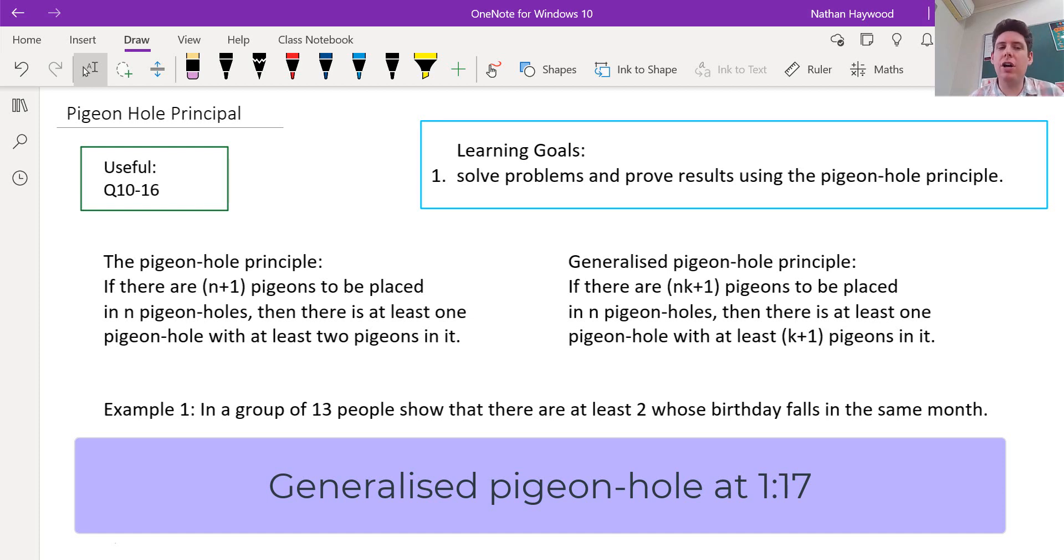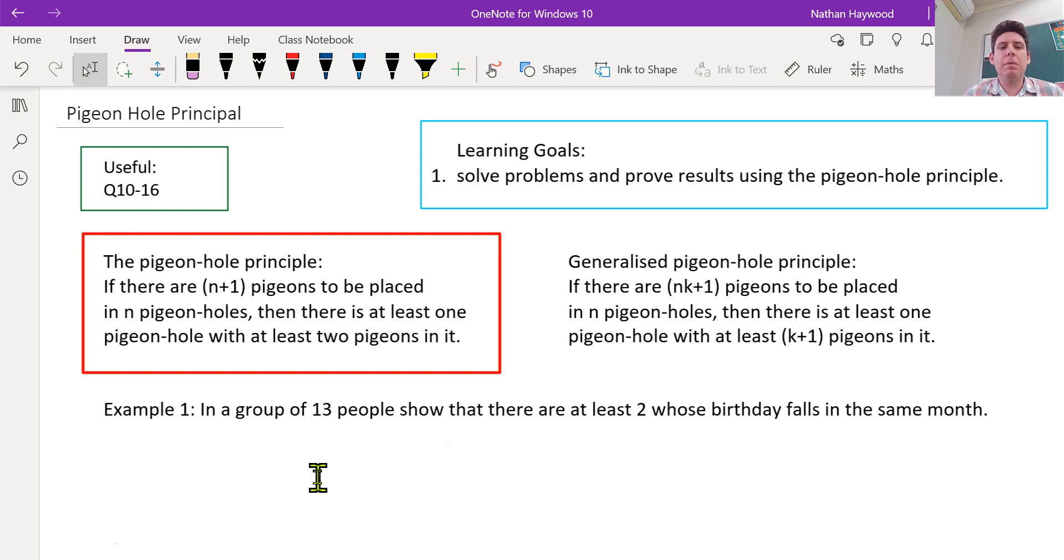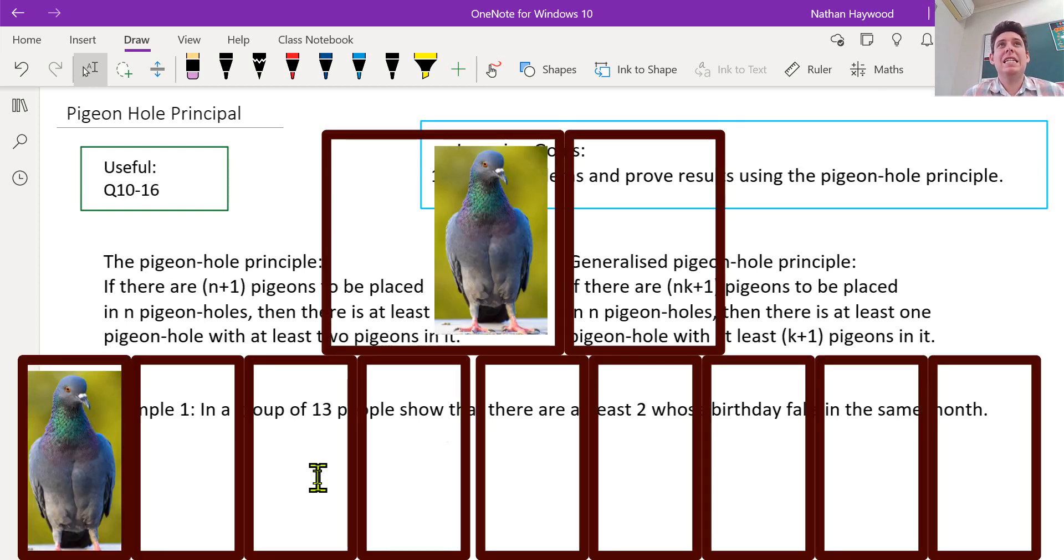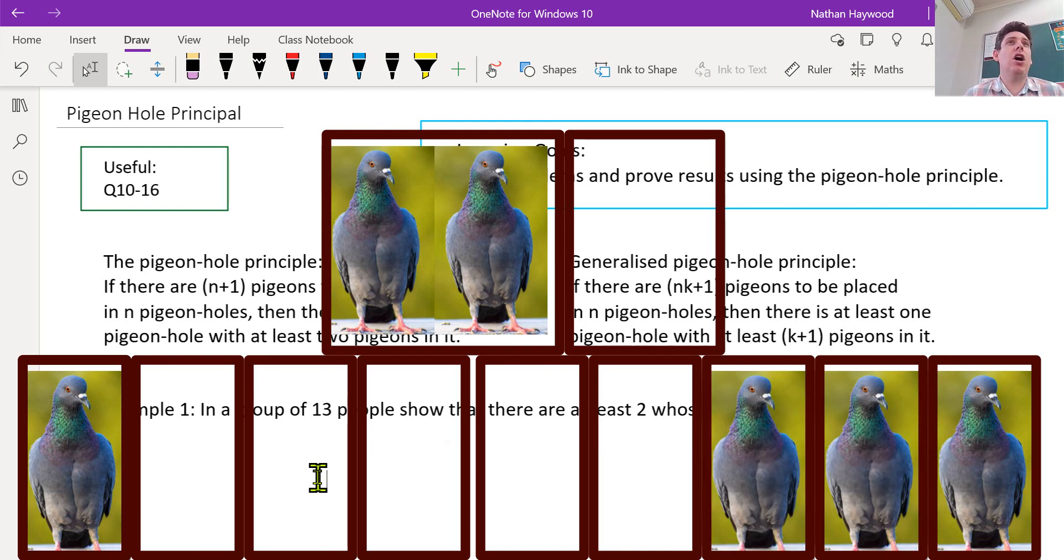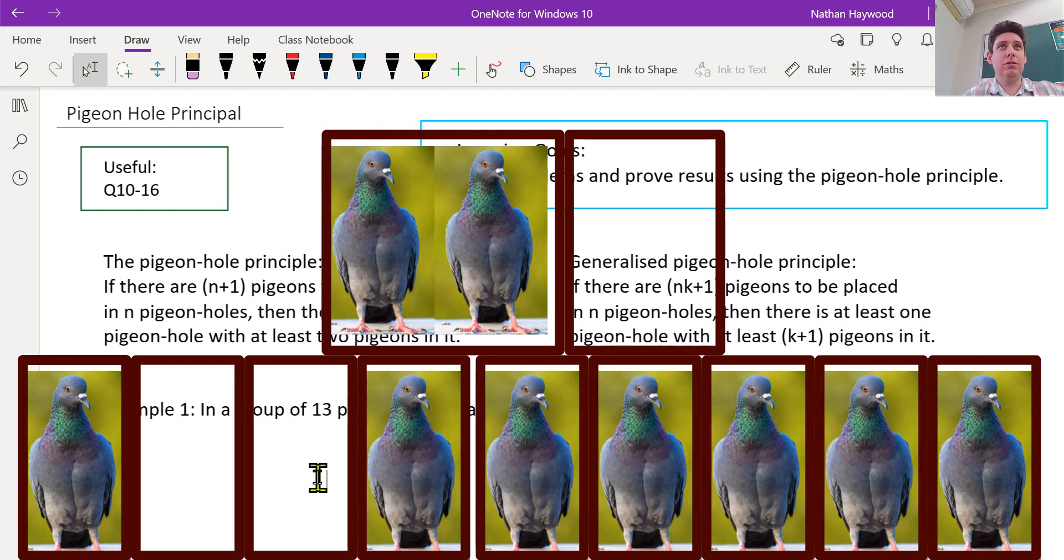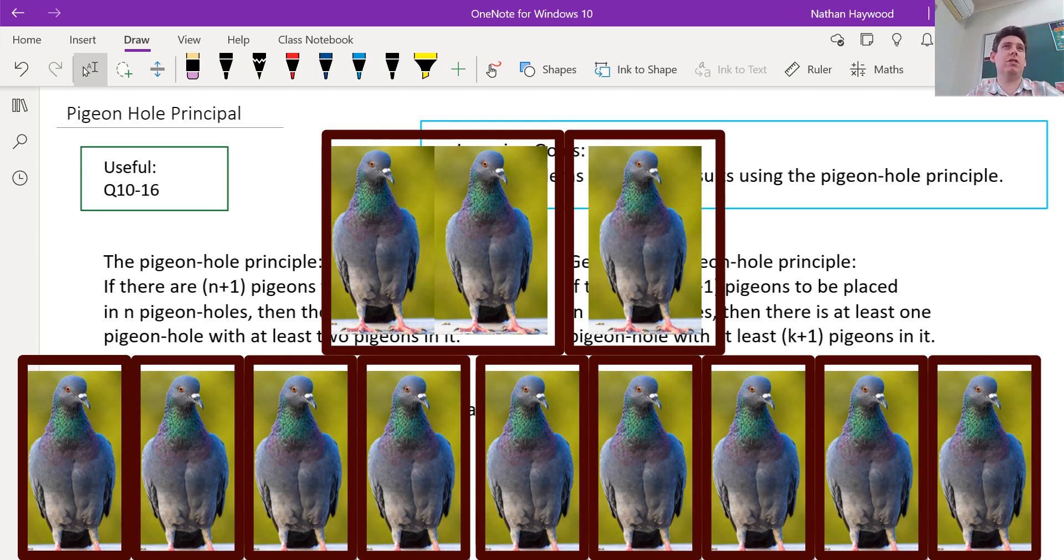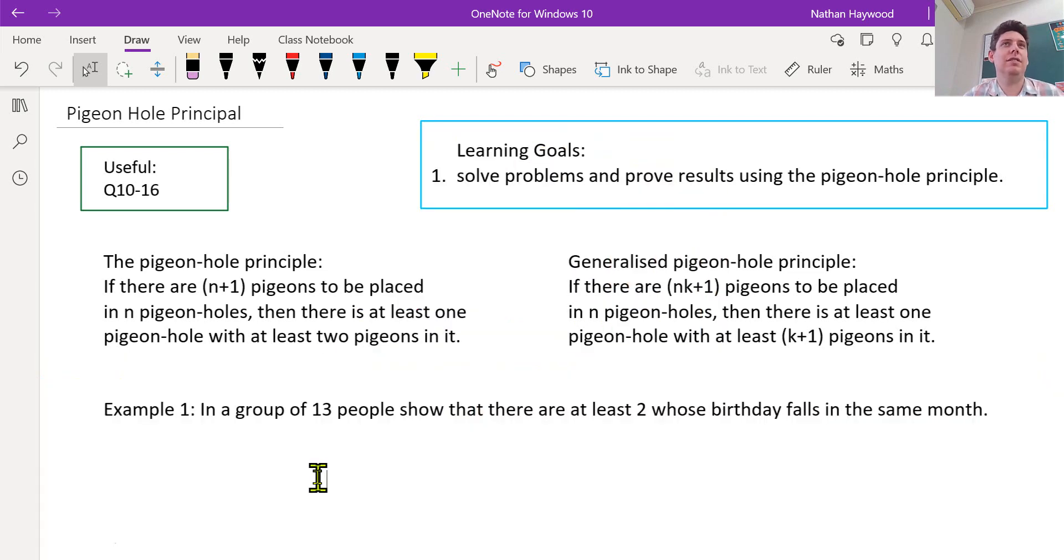We're doing the pigeonhole principle. So it's fairly simple. You have 12 pigeons, 11 pigeonholes to fill. At least one of the boxes has how many pigeons? Two. That's it.